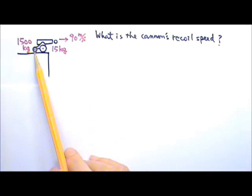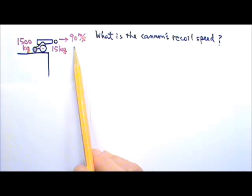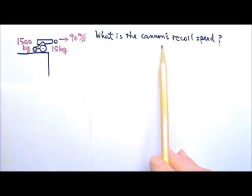A 1500 kg cannon is used to shoot a 15 kg cannonball horizontally from the top of a cliff. If the cannonball is shot with a speed of 90 meters per second, what is the cannon's recoil speed?